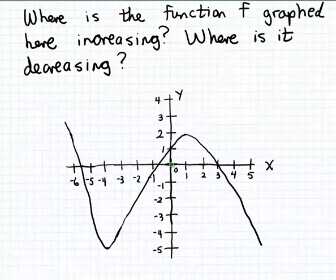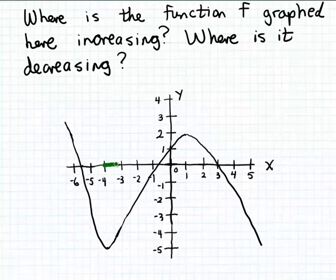That behavior continues right about until we get to the input 1. Notice that after the input 1, as the inputs increase, the curve is falling, so the outputs are decreasing. To the right of the input 1, as the inputs increase, the outputs are going to be decreasing. So what we're looking for in discovering where the function f is increasing is this portion of the graph that corresponds to the inputs between minus 4 and positive 1. Let me graph over that portion of the x-axis in green, because that's where the outputs are going to be increasing.